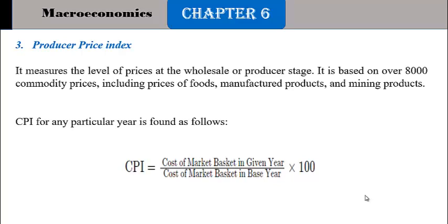When we studied GDP, we studied the concept of base year and given year. The same concept applies when calculating CPI. You have a base year and a given year. For the current year — the given year — you will have a price. Then you multiply it by 100.